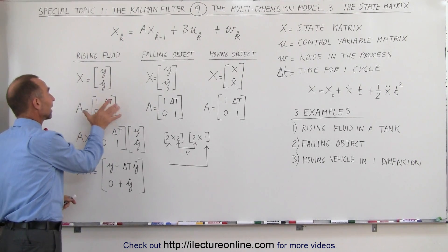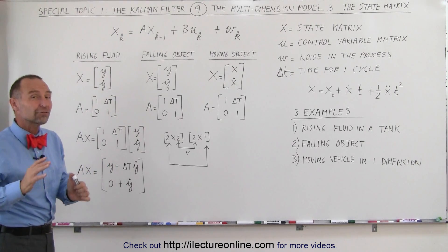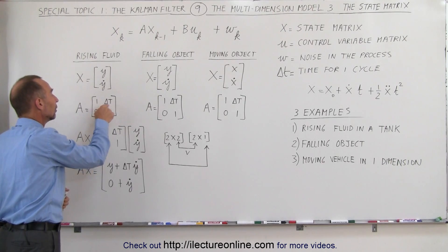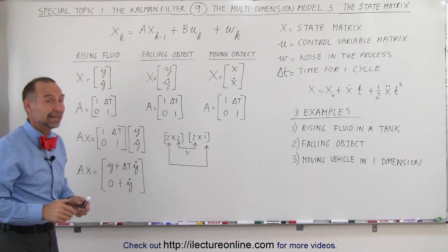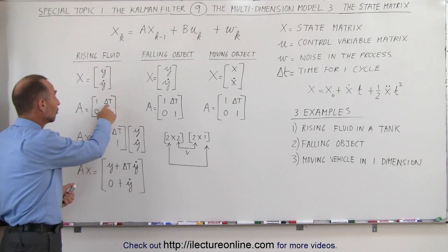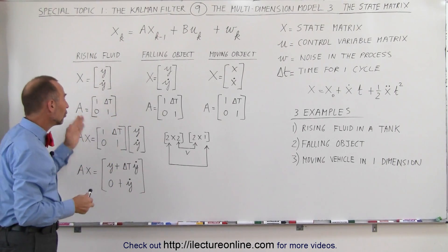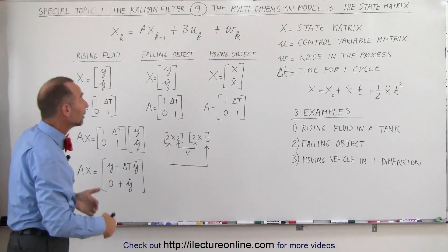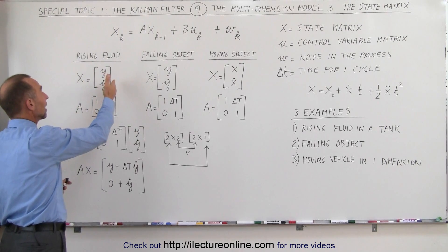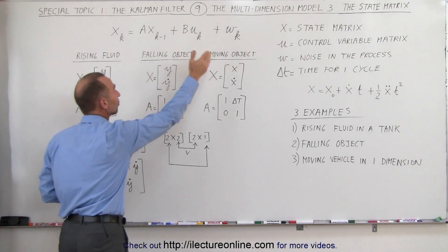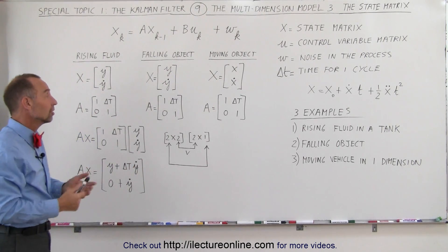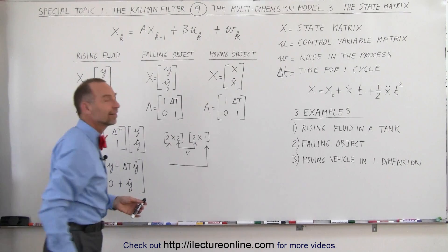In this case the A matrix looks like this. This is a standard form of the A matrix. It has 1's across the diagonal, a 0 in one corner, and delta t in the other corner. If delta t is 1 second, you put 1 there; if delta t is a tenth of a second, you put 0.1 there. Notice that the A matrix looks the same in all three cases, because in all three cases the state matrix x looks exactly the same — position and velocity — and we don't care if it's in the x, y, or z direction. Therefore, all the A matrices look exactly the same.